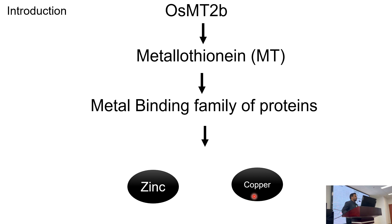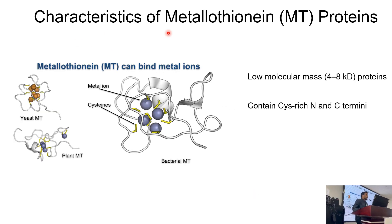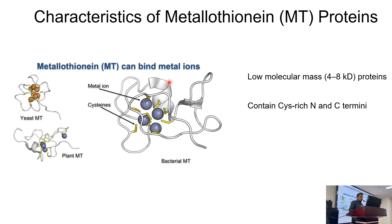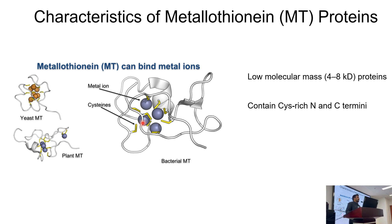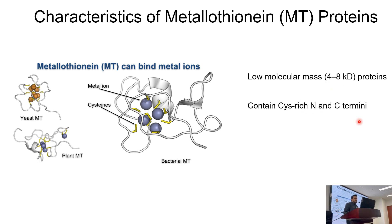We will be focusing on the role of OSMT2B. Here are the important characteristics of metallothionein proteins. Metallothioneins can bind to metal ions. The yellow portion represents the cysteine-rich residues and the blue part represents zinc and other metals — the metals are chelated on the surface of these proteins. Their function is conserved across yeast, plants, and bacteria. They are low molecular weight, approximately 4 to 8 kDa, and contain cysteine-rich metal-binding N-terminal and C-terminal regions.